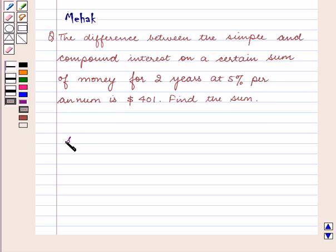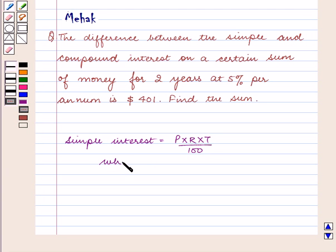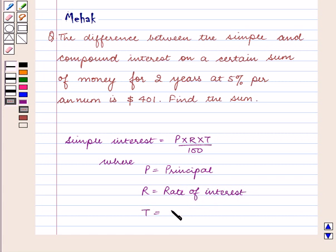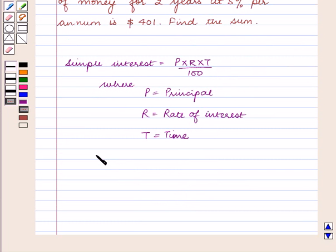We know that simple interest is equal to P into R into T upon 100, where P is equal to the principal, R is equal to the rate of interest, and T is equal to time. Also, the compound interest formula is: amount A is equal to P into 1 plus R upon 100, raised to power N.